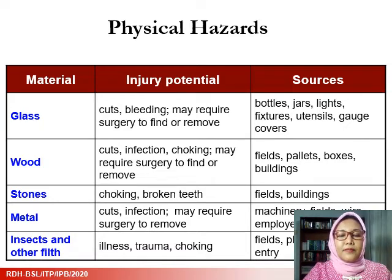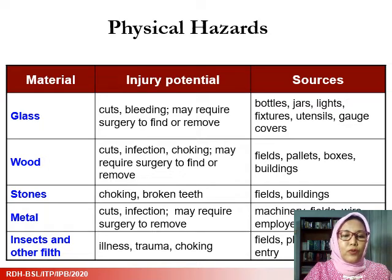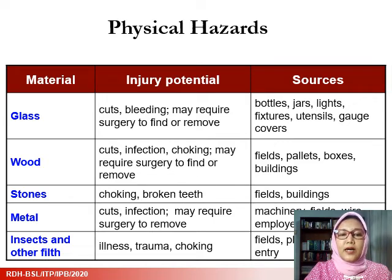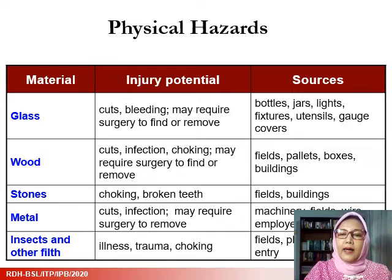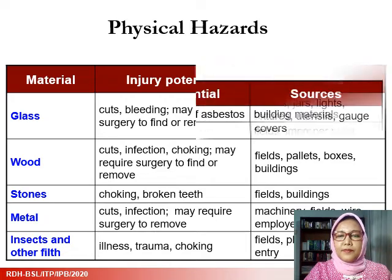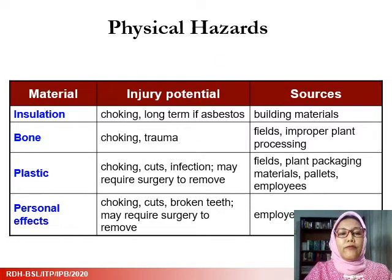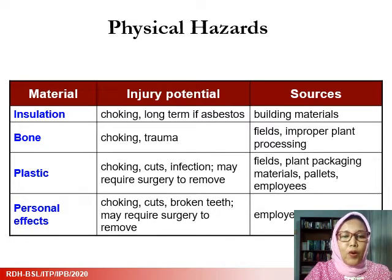Physical hazards can be found as pieces of glass, wood, stones, metals, or insects. The general injury potentials are cuts, bleeding, choking, and broken teeth, and may require surgery to find or remove. The sources of these physical hazards vary. Additionally, there are physical hazards that originate from insulation, and can be in the form of bone, plastic, and personal effects or jewelry.